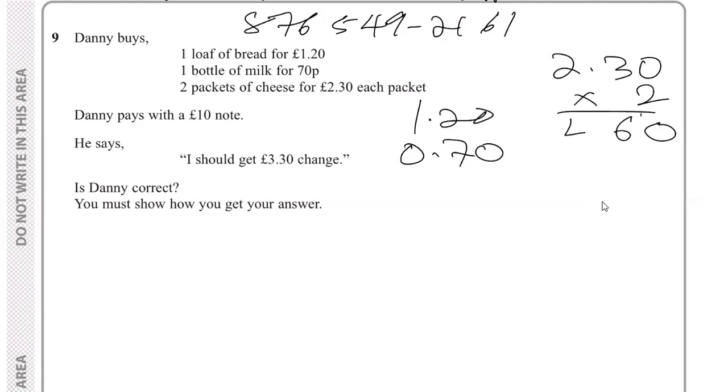We're going to add 1.20 plus 0.70 and 4.60. Zero plus zero is zero, six and seven that's thirteen, carry the one, one plus two is three plus four is seven... wait, let me recalculate. Zero, six and seven is thirteen, carry one, one plus two is three, plus four is seven... no wait. Let me do this properly: we get a total of 6.50.